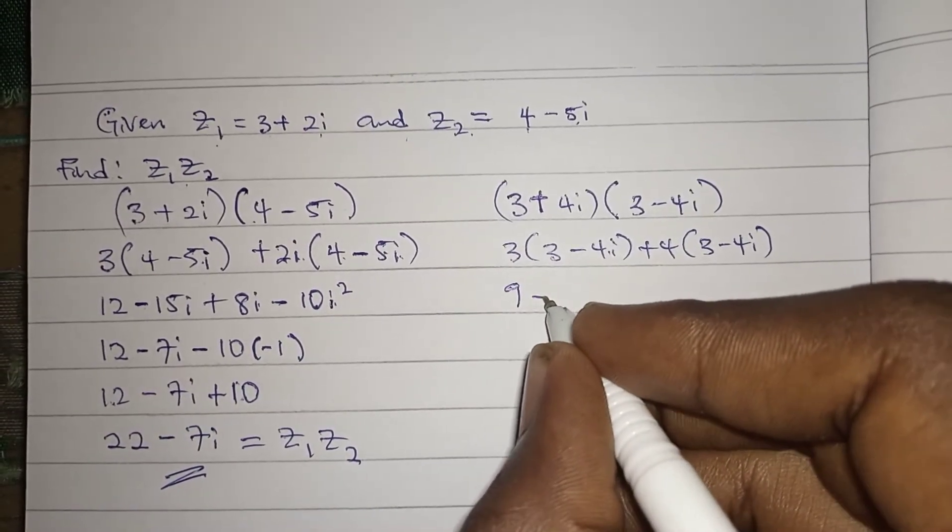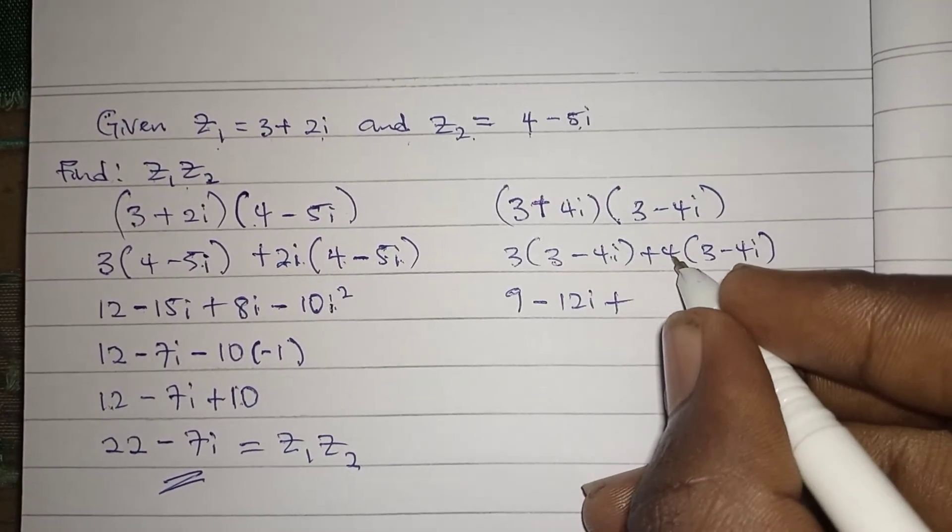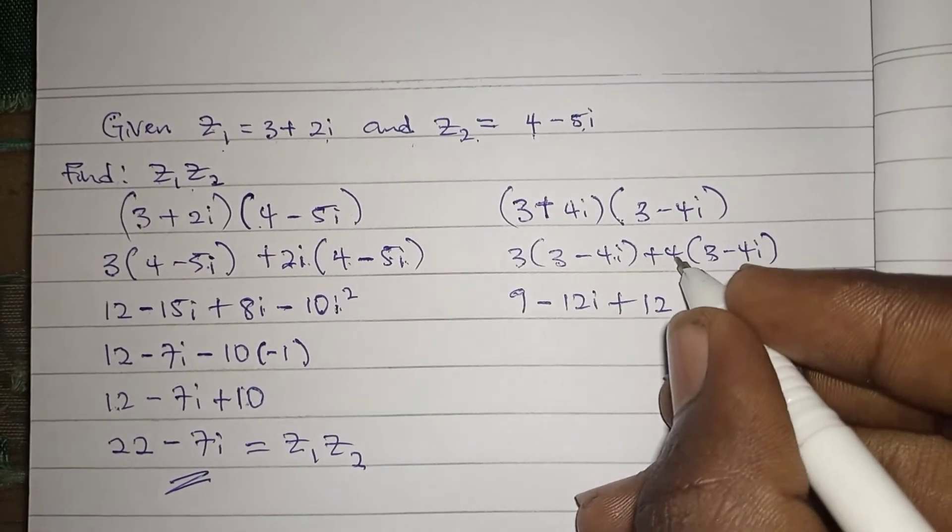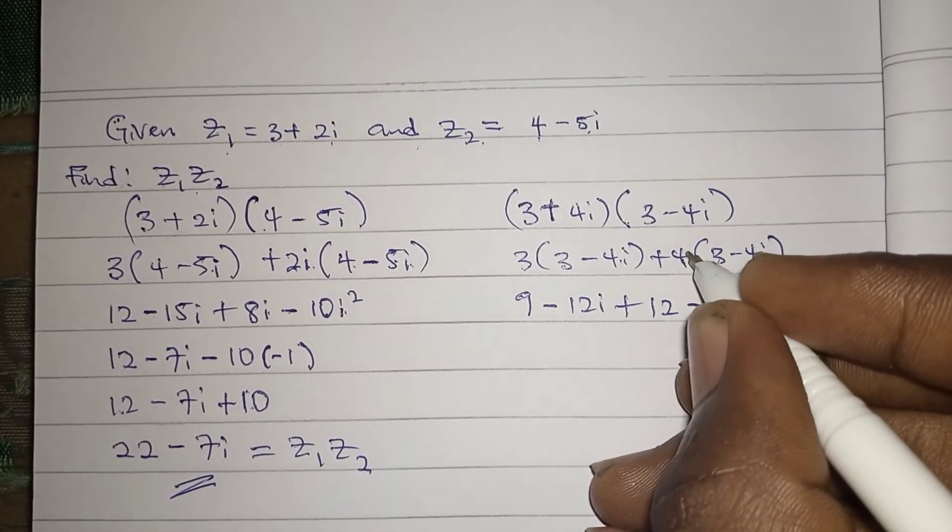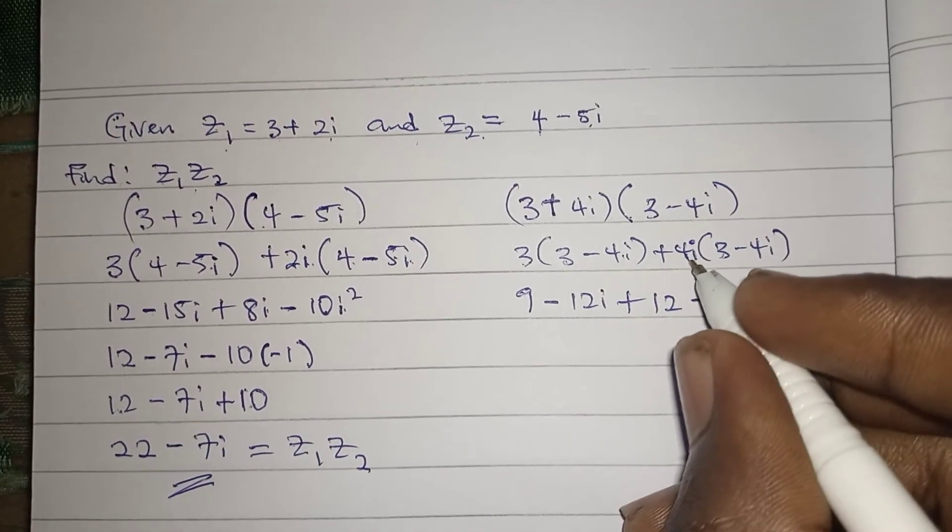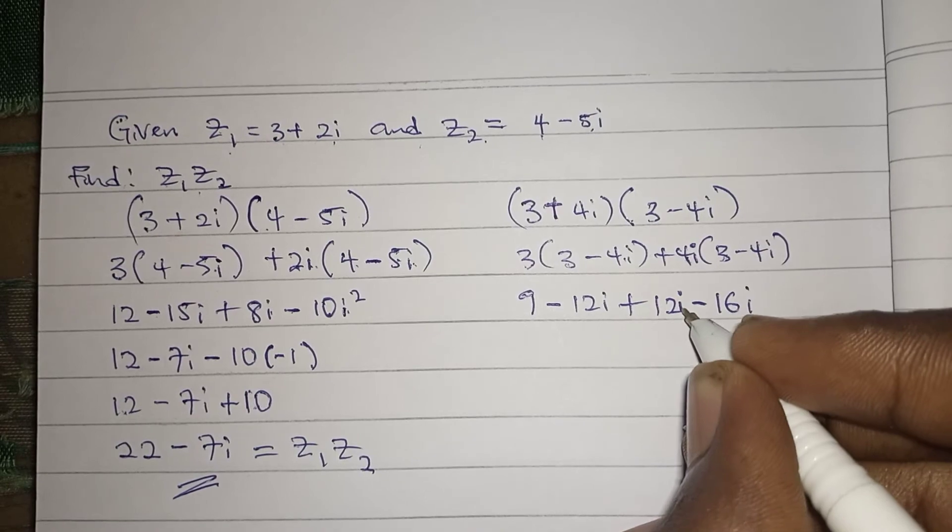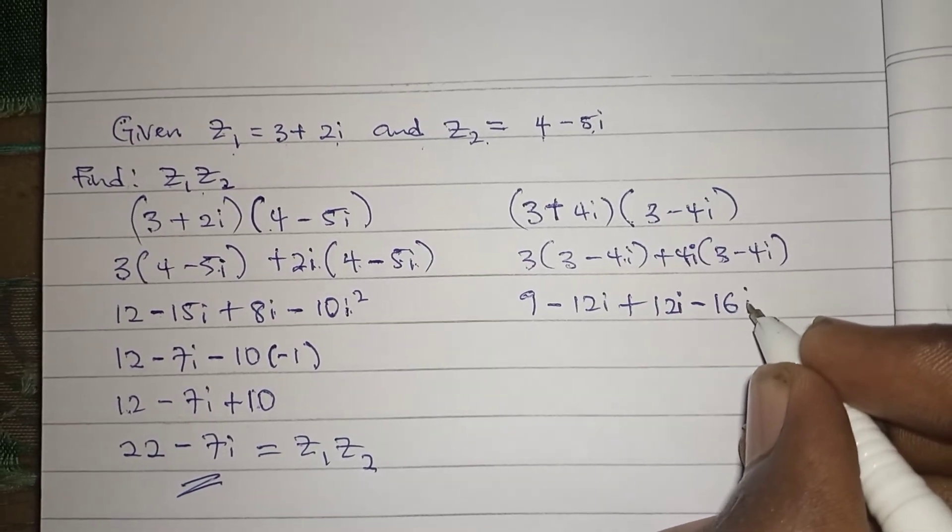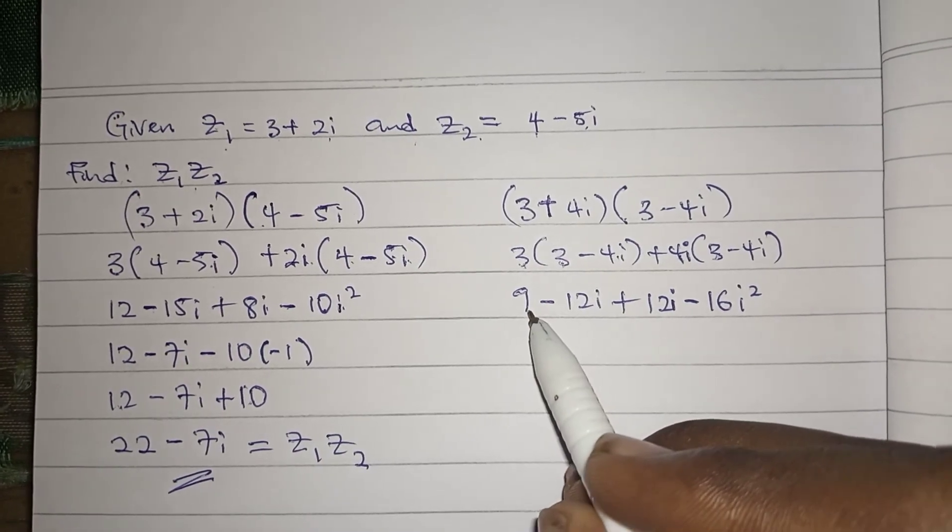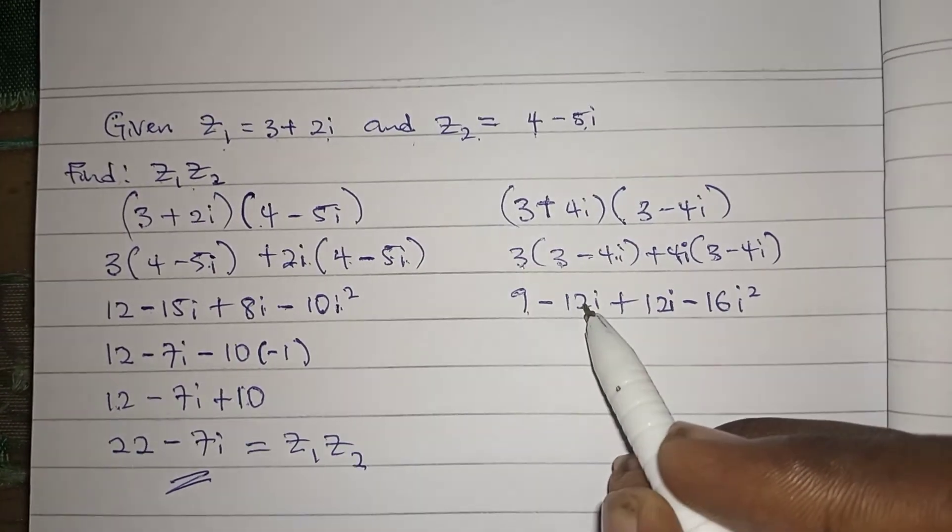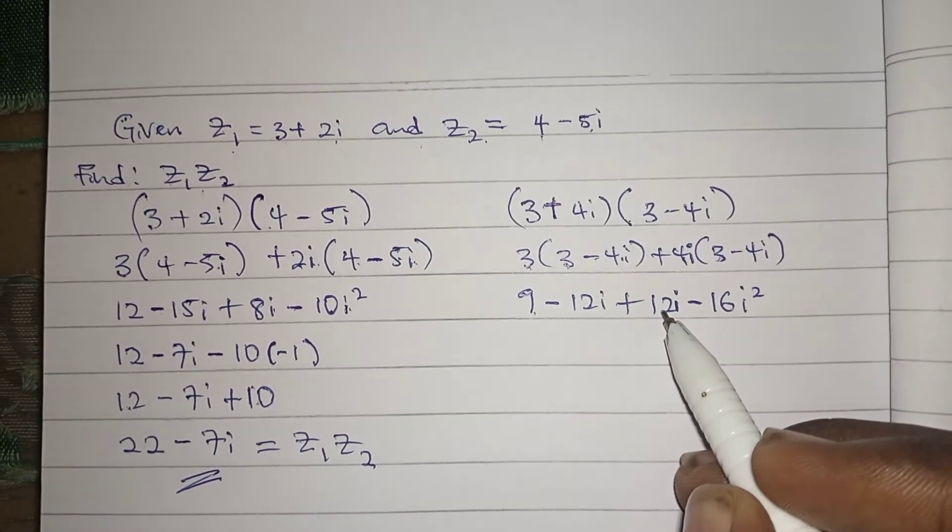We have 3 times 3 to give us 9, 3 times minus 4i to give us minus 12i, 4i times 3 to give us plus 12i, and 4i times minus 4i to give us minus 16i squared.